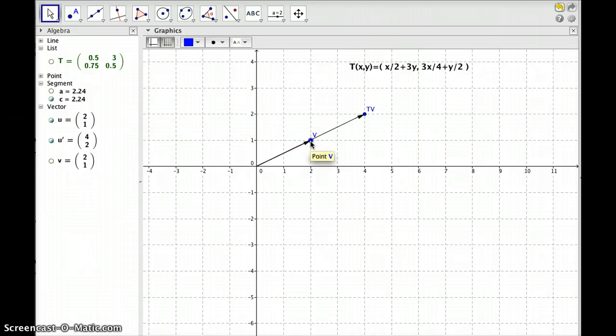Are there any other eigenvectors? Well, I can kind of keep dragging this v around and look for another place where v and t of v are parallel. Aha! Okay, so here's another one. So this vector is also an eigenvector, this vector here, 2, negative 1, and the associated eigenvalue is negative 1, because t of v is negative 1 times v. It just switches the direction.